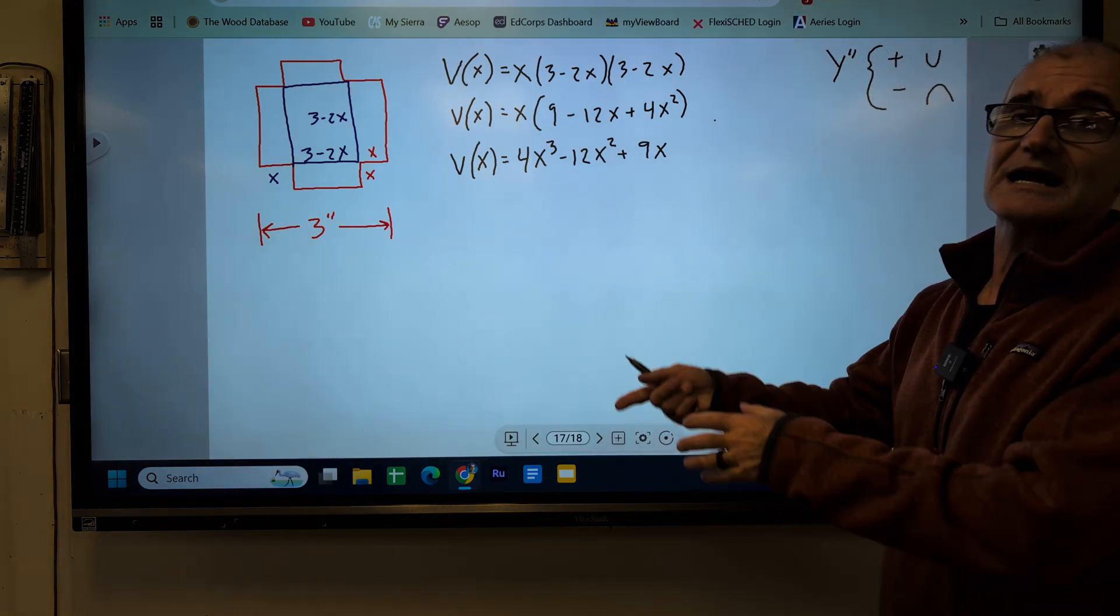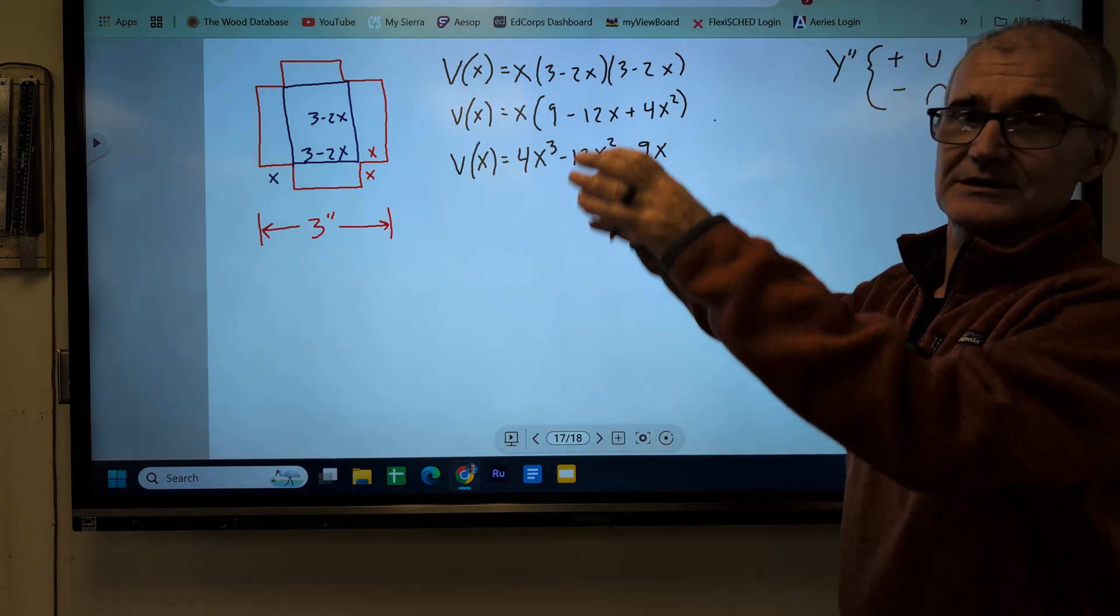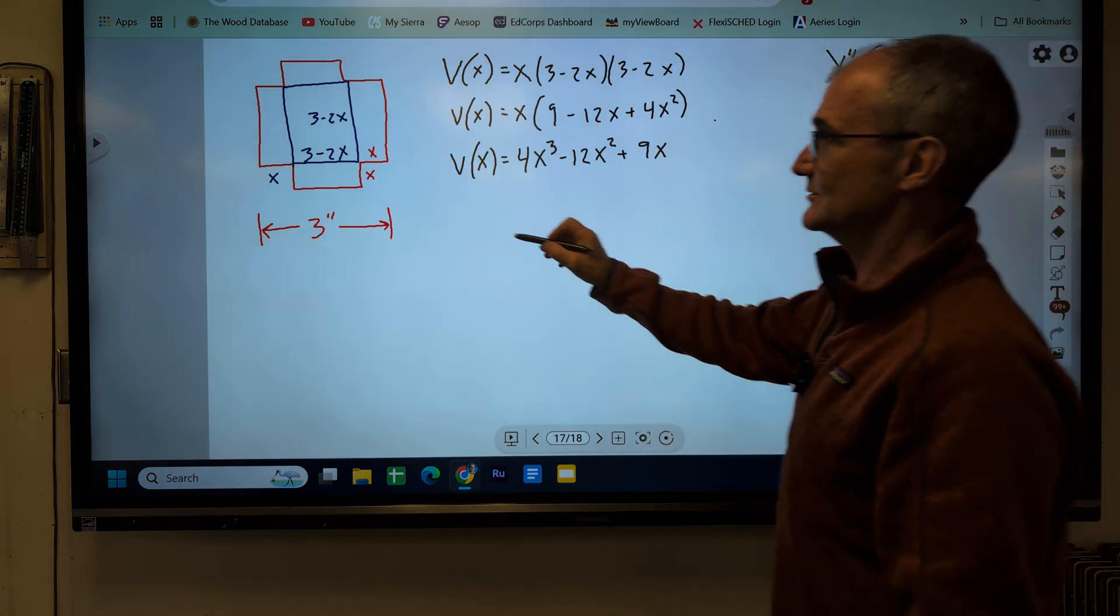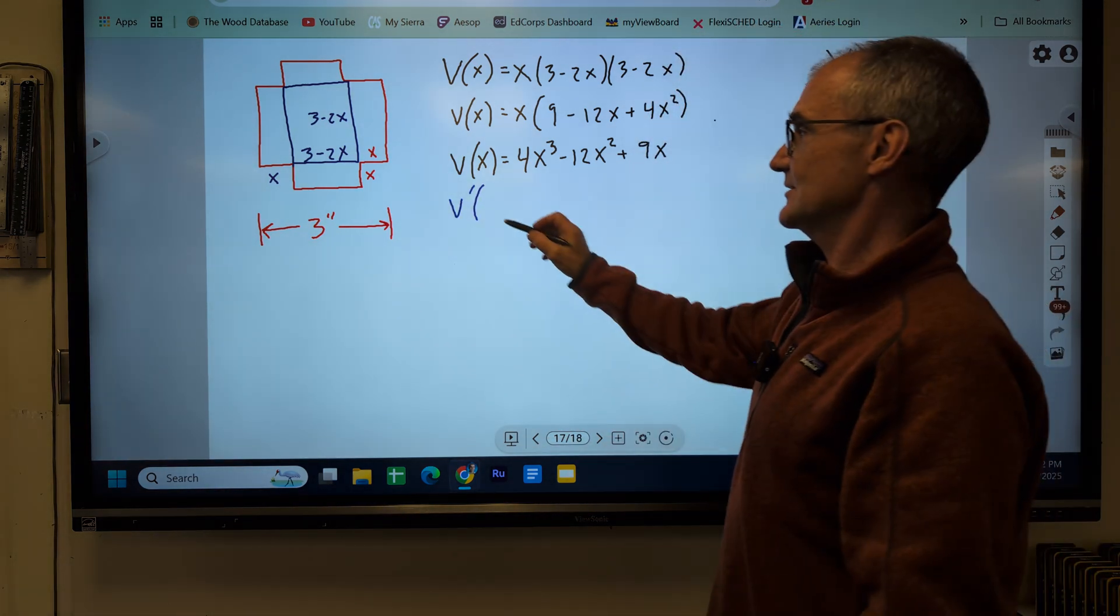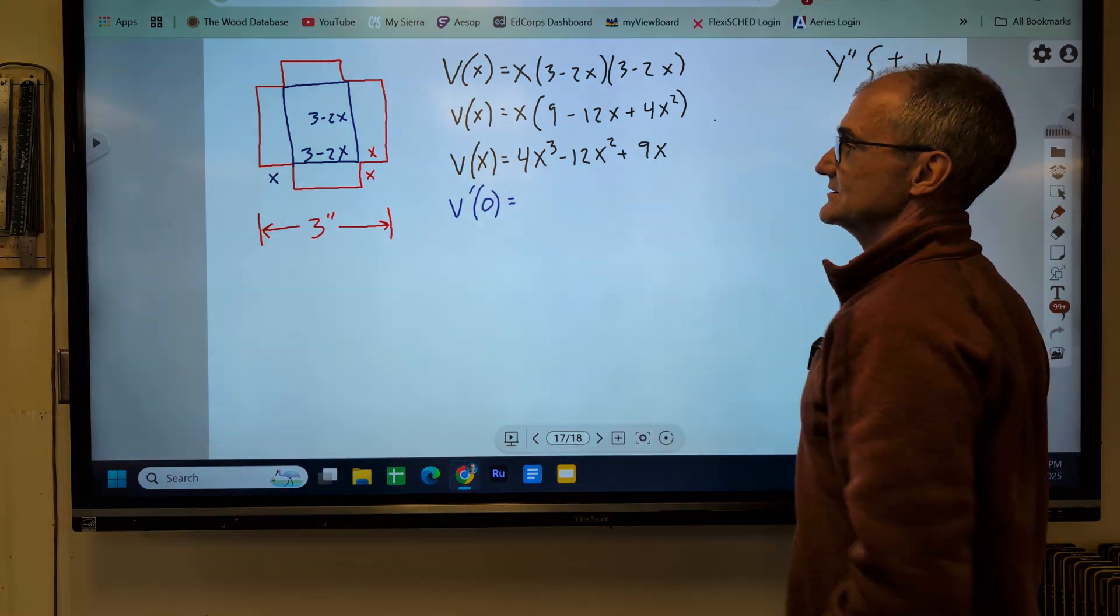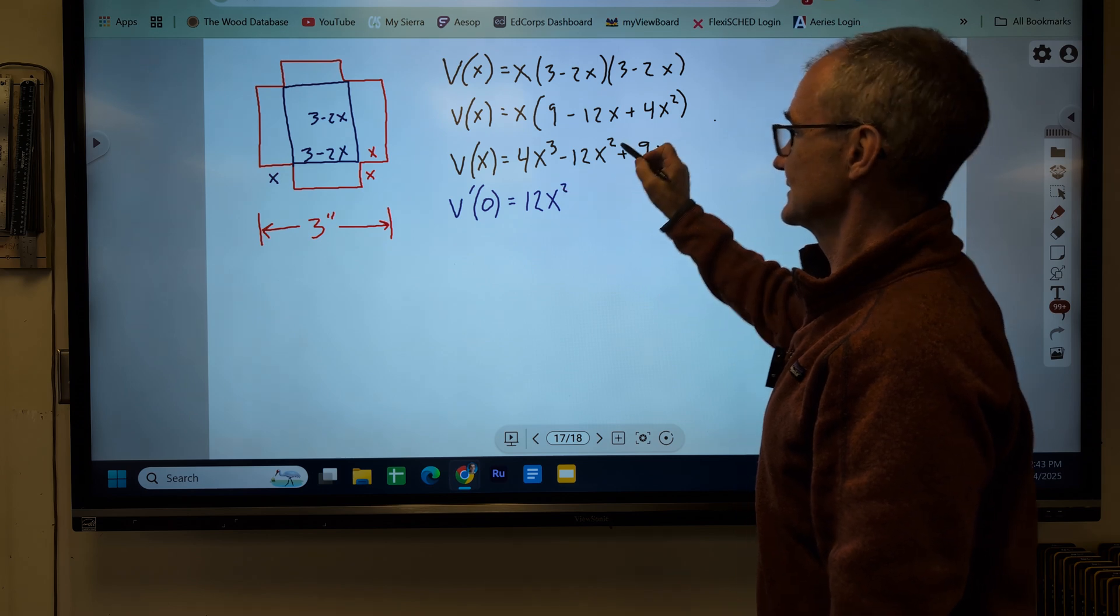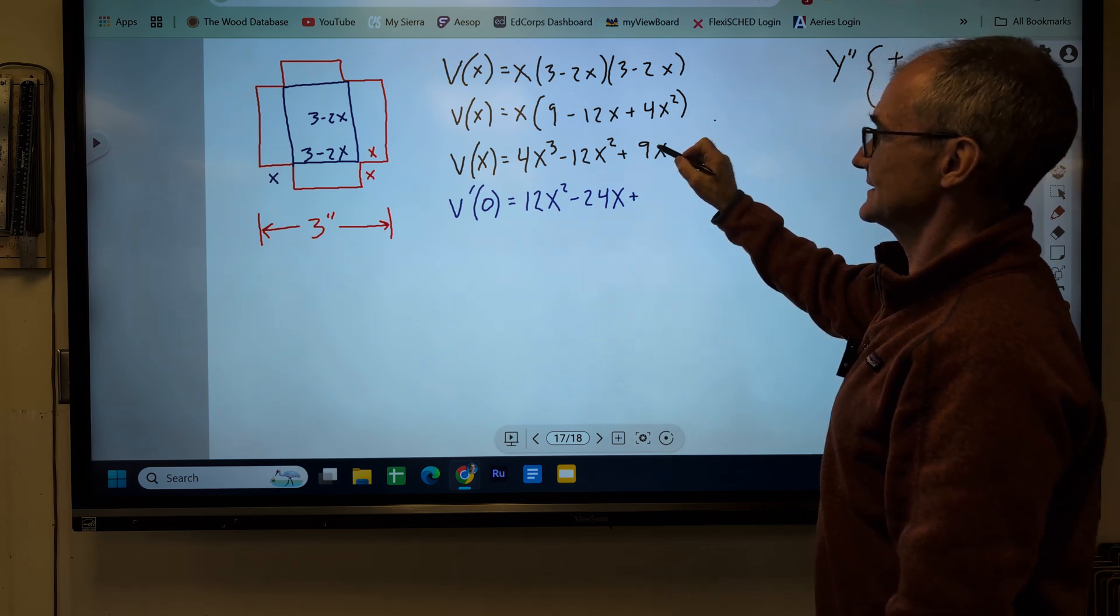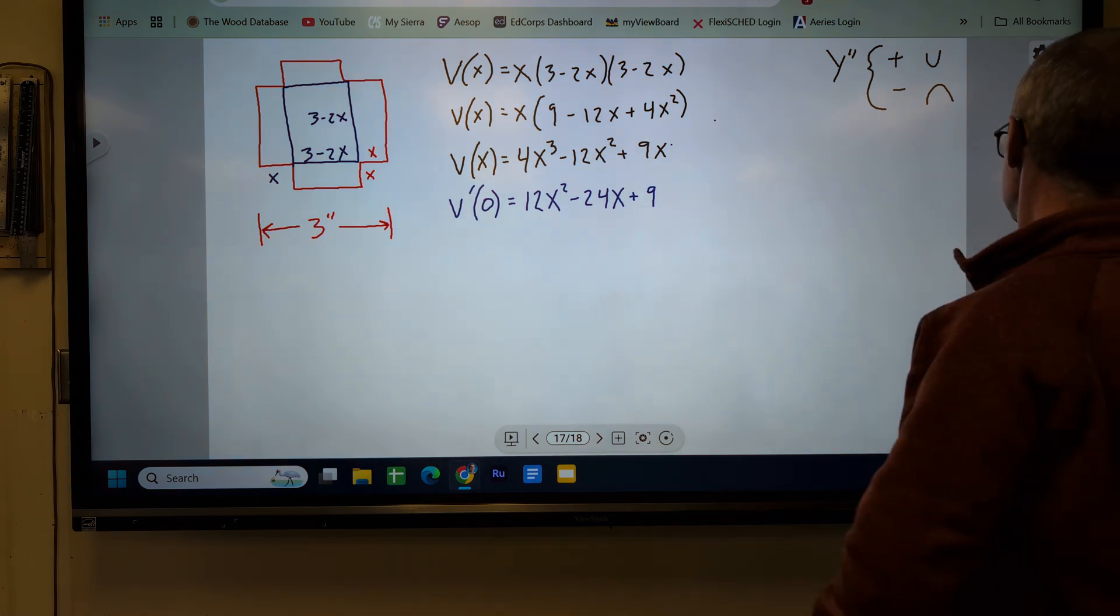And now, again, the question is where is it optimized? Where is it going to be a maximum? So what value of X will give me the most air or water I can pour into that box? So the way I'm going to do that is I'm going to take the derivative of my function and set it equal to 0. So V prime of X, I'm going to say V prime of 0 because I'm going to set it equal to 0. I take the derivative of this function, 4 times 3 is 12, subtract 1, X squared. 2 times negative 12, negative 24, X to the first, 9, X to the first, which is just 9. So there's my derivative.